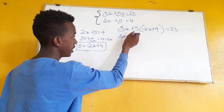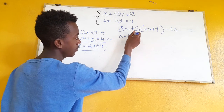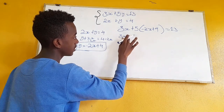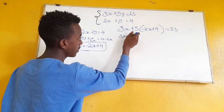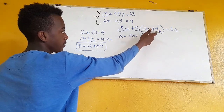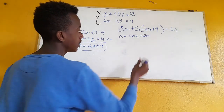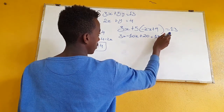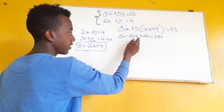3x plus 5 times... 5 times minus 2x gives minus 10x. 5 times 4 gives plus 20, is equal to 13. So 3x minus 10x gives minus 7x, plus 20 is equal to 13.